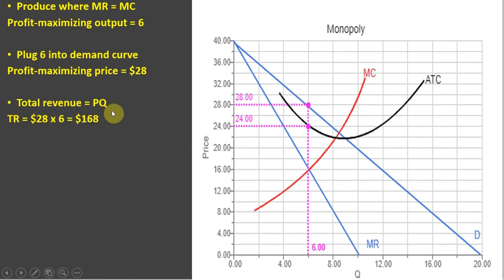The next step is to get total revenue. Total revenue is the price times quantity. So we're going to take $28 and multiply it by 6. So this Monopoly has total revenue of $168.